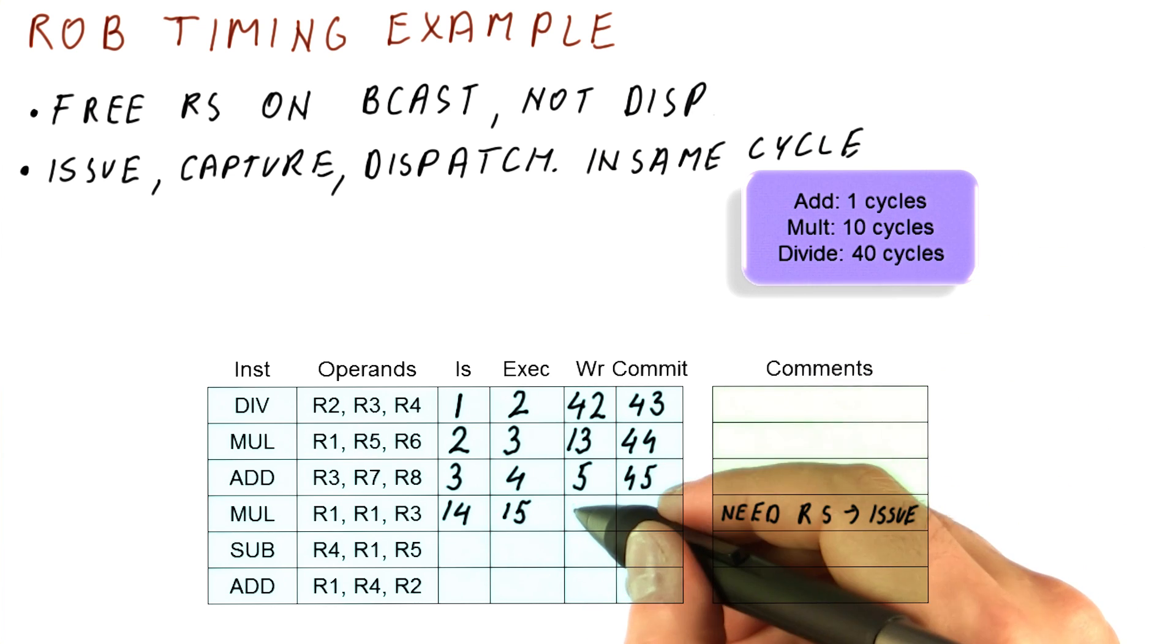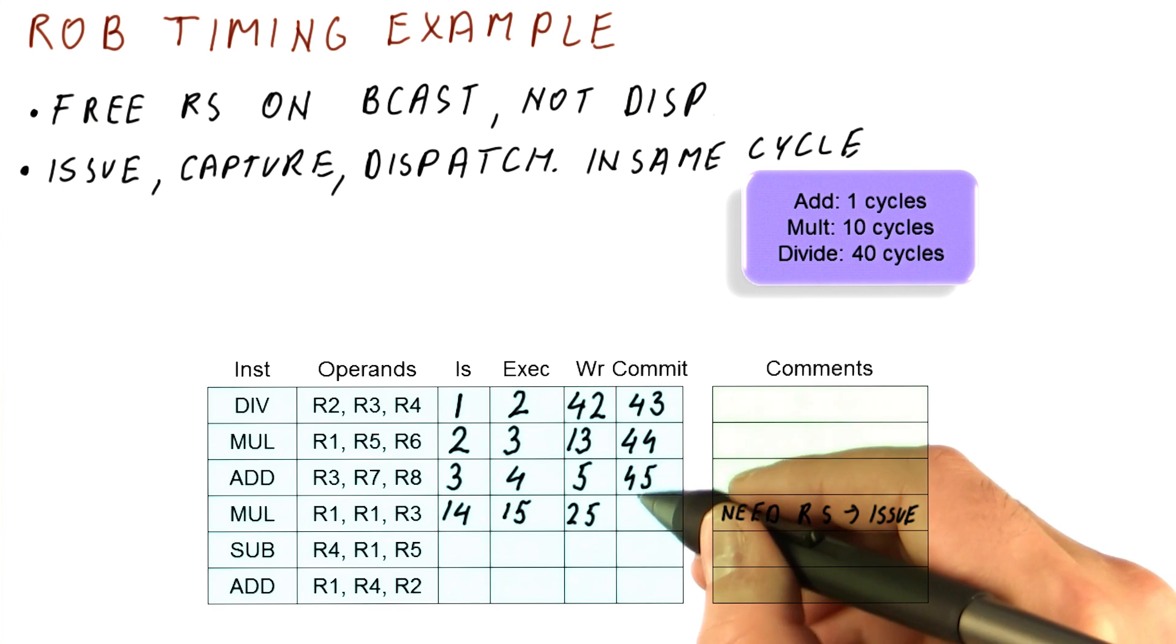It's a multiplication instruction. So it's going to try to broadcast the result in cycle 25. And we will be able to commit it in cycle 46.